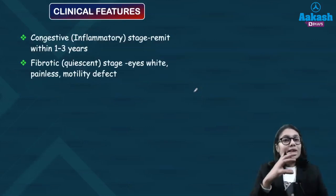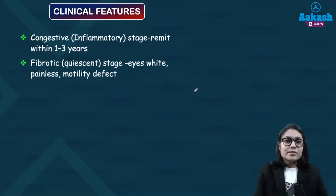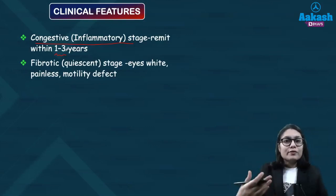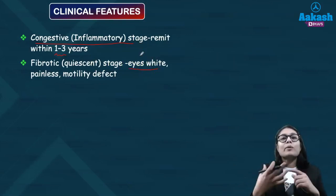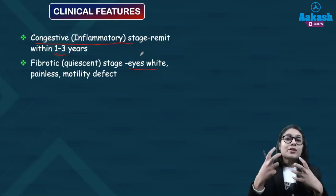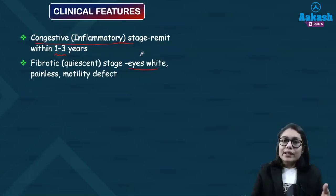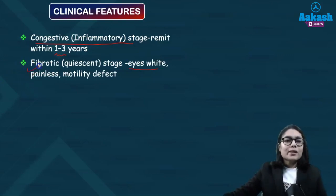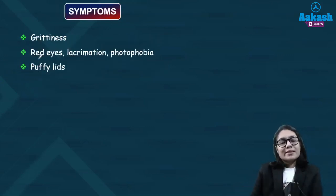The acute inflammatory or congestive stage lasts for around one to three years, following which inflammation settles and fibrosis sets in, leading to various restrictive pathologies. During the congestive phase, the patient is symptomatic with tearing, photophobia, lacrimation, red eye, and a lot of irritation. In the late quiescent stage, the eye is quiet and painless, but patient has restrictive pathologies in the form of motility defects.